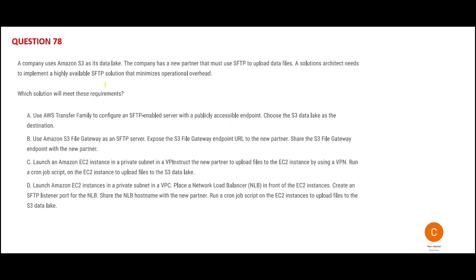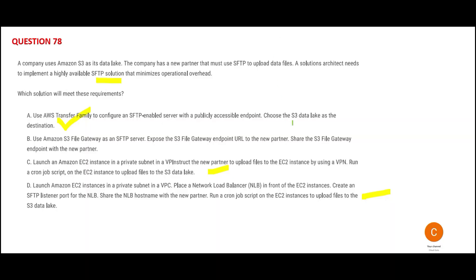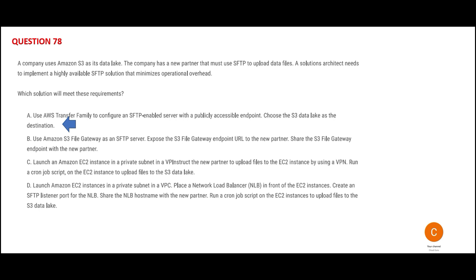The next question needs an SFTP solution. Looking at Options C and D, these are trying to create a custom solution for this purpose. But AWS already has a ready-made solution in the form of Transfer Family — an SFTP file transfer solution that is easily manageable, lets you share data in a simple and secure manner, and is scalable. Whether you're moving 10 files or one million files, it will work every time with high performance. That is my answer.